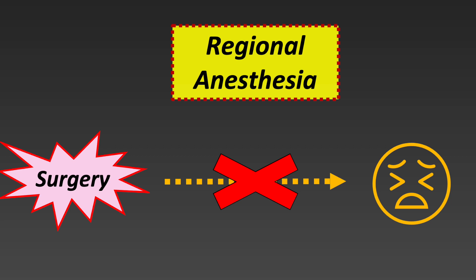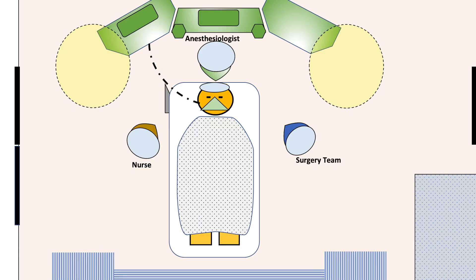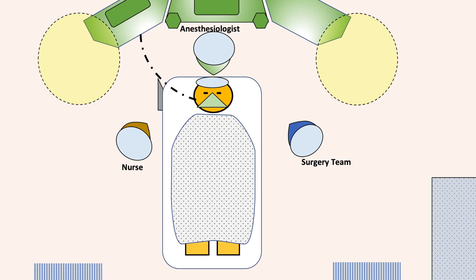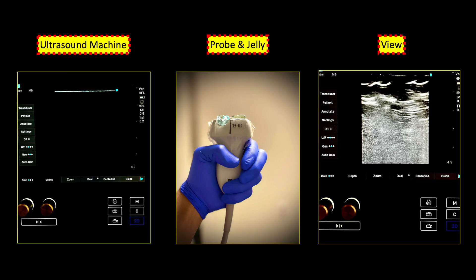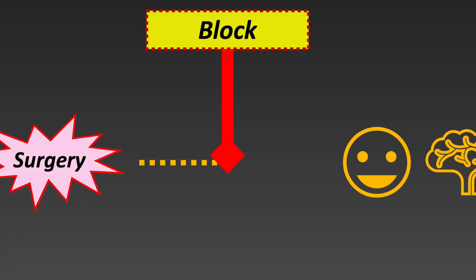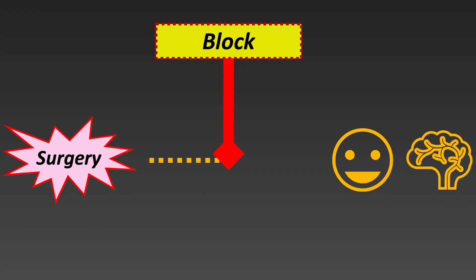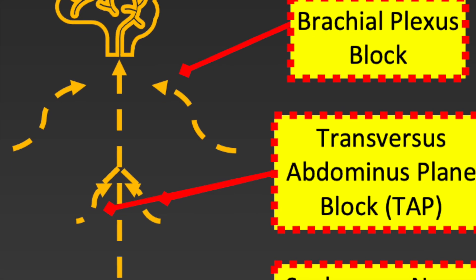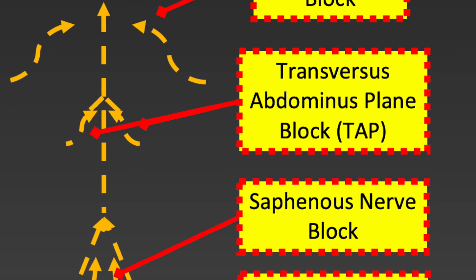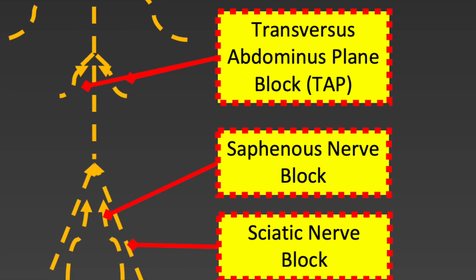Without a doubt, surgery can be painful. In regional anesthesia, we block this process. We consider where the surgery happened, or what area of the body was operated on, and with a needle and ultrasound machine, inject numbing medication right where the nerve or nerves are. The numbing medication temporarily blocks pain signals to the brain. It is excellent because it is targeted pain relief right where you need it, and a single injection can block the pain for up to almost a full day.